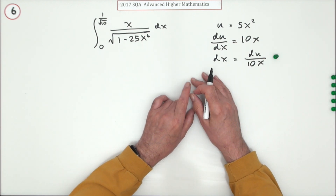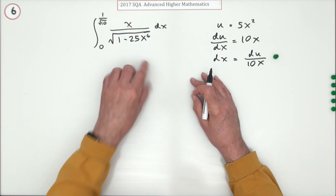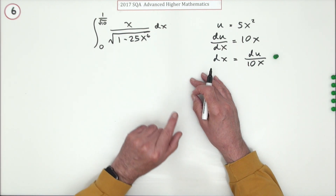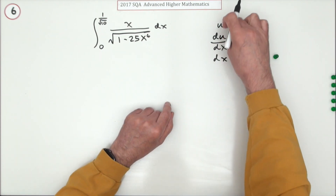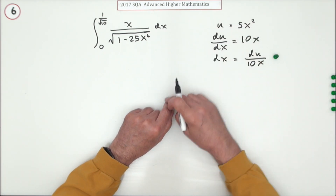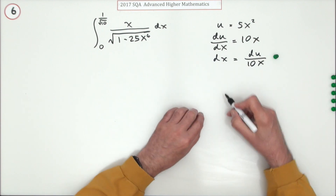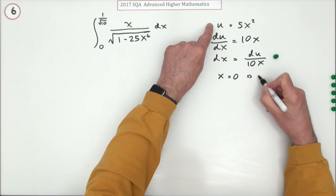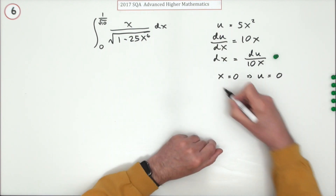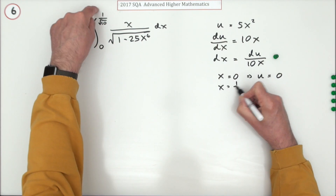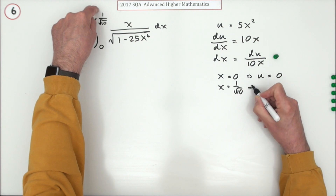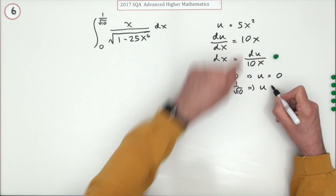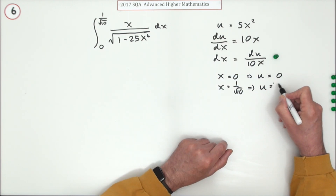You could go through it all, get the answer, and then change back into x's, or you could work entirely in the substituted variable — but that means changing the limits. So when x is zero, u is five times that, which is also zero. When x is one over root 10, then u will be five times the square of that, so that's five over 10, which is a half.